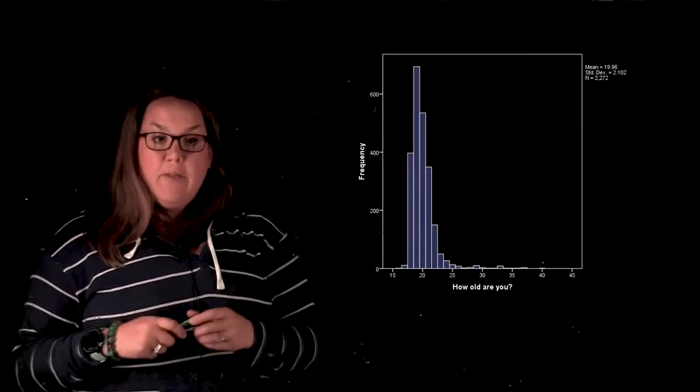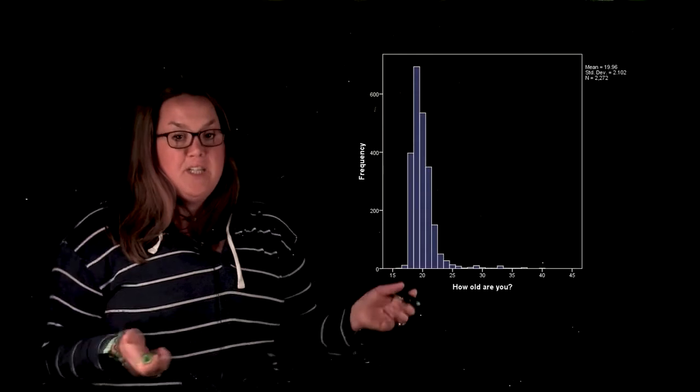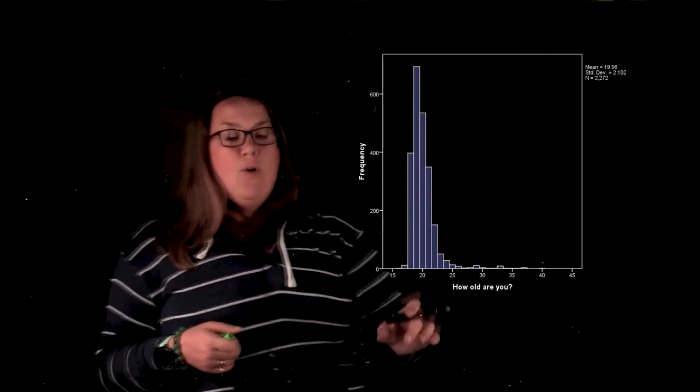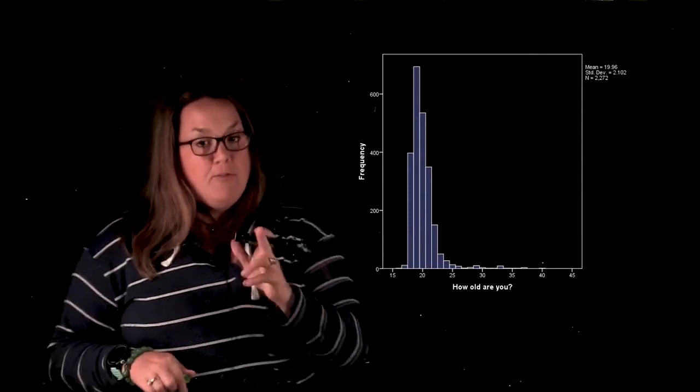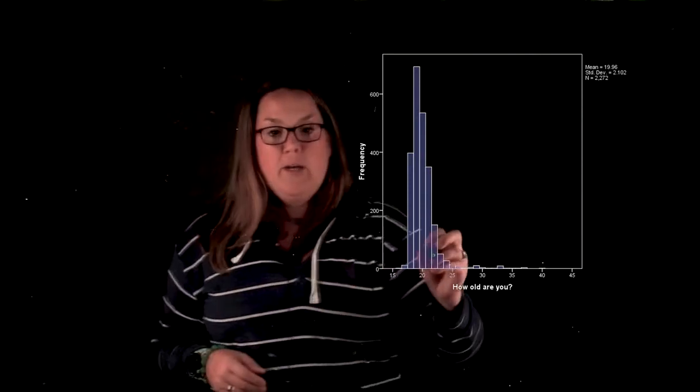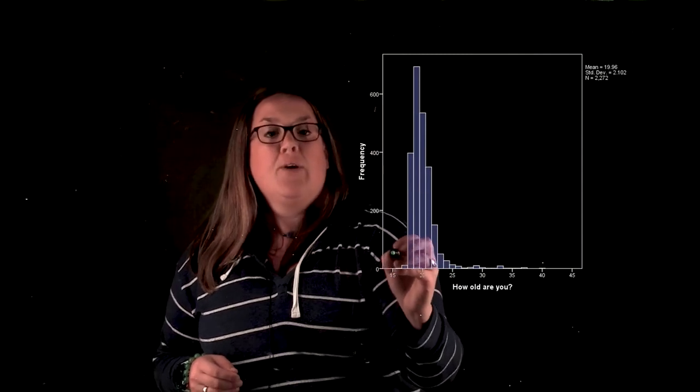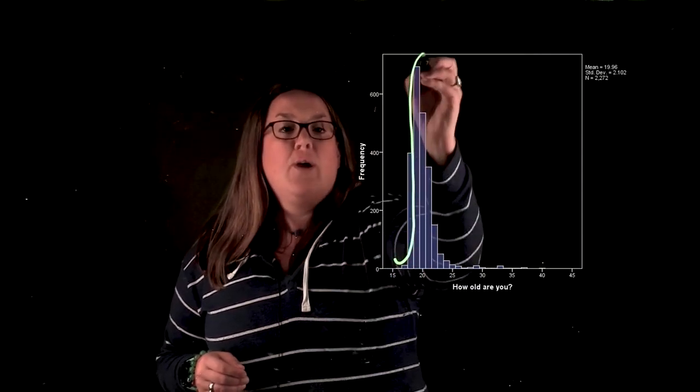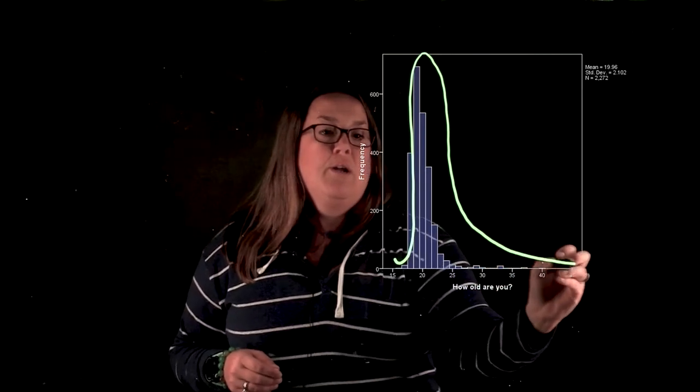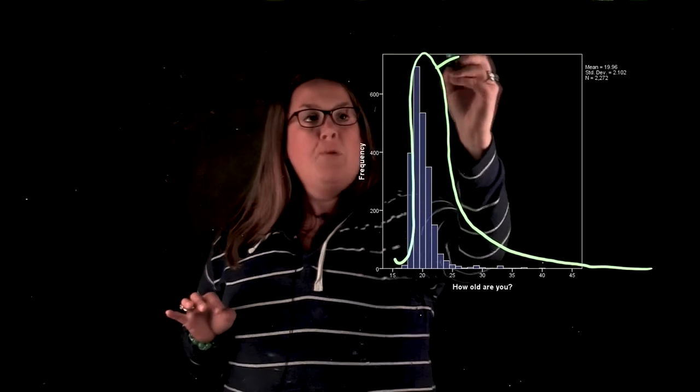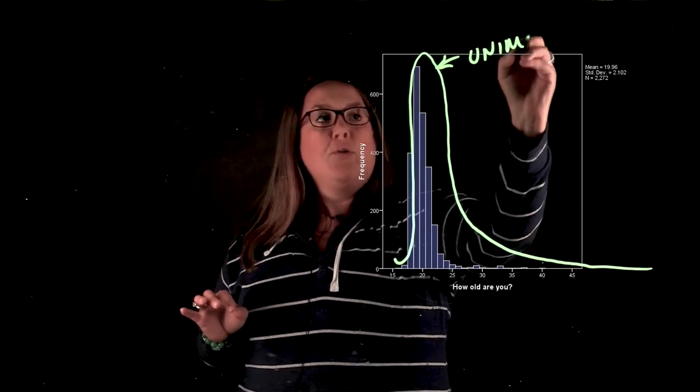So here is another distribution. This is still a histogram because remember that x-axis is a quantity. Even though it has frequencies, this is not a bar graph. Bar graphs are only for categorical data. I'm going to refer to that multiple times because it's a common mistake. Now again, we're going to draw a curve around this distribution. Now you can see here, we still have one prominent peak, so we would call it unimodal.